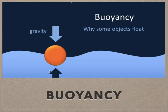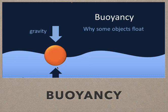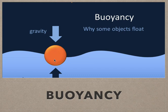If the upward force is more than the downward force, then the object will float on water. But if the downward force is more than the upward force, then the object will sink in water. So if the weight of displaced water is more than the weight of the object, the upward force will be more and the object will float. But if the weight of displaced water is less than the weight of the object, the downward force will be more and the object will sink.